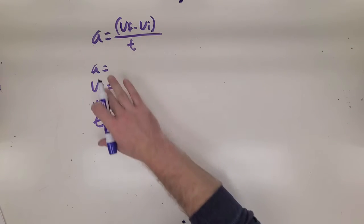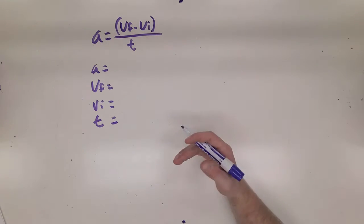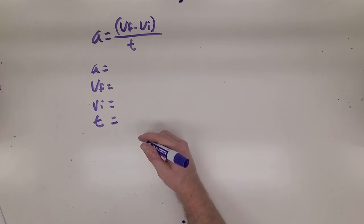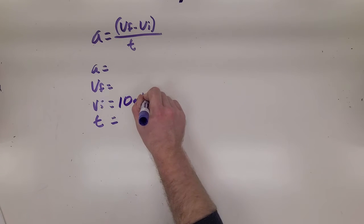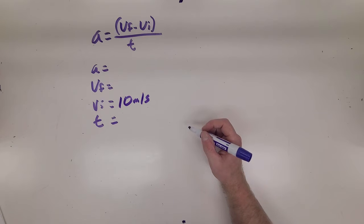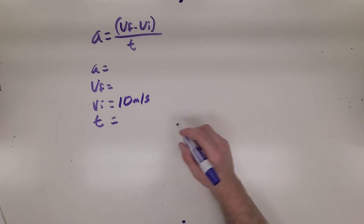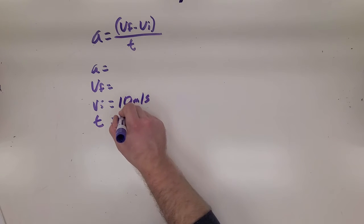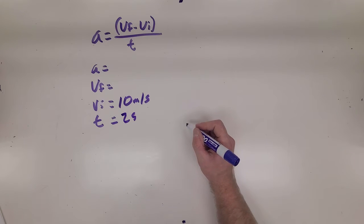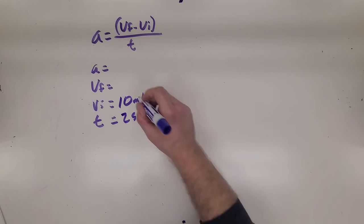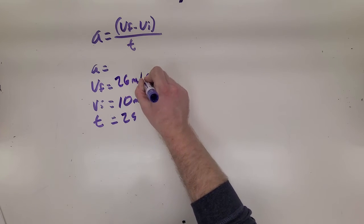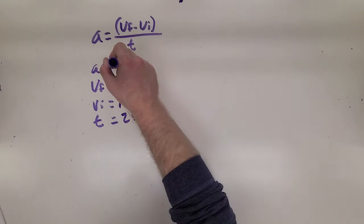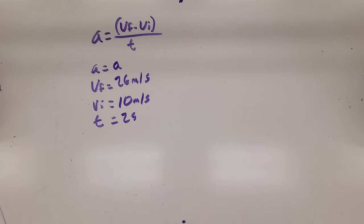Now we plug in the variables that go into this equation and figure out what we know and what we don't know just from reading this problem. The roller coaster's velocity at the top of a hill is 10 meters per second. That is its initial velocity. Two seconds later it reaches the bottom of the hill, so the time of duration for this change in velocity is two seconds. It reaches the bottom with a velocity of 26 meters per second, so its final velocity was 26 meters per second. What is the acceleration of the coaster? We'll just leave that as A for now.